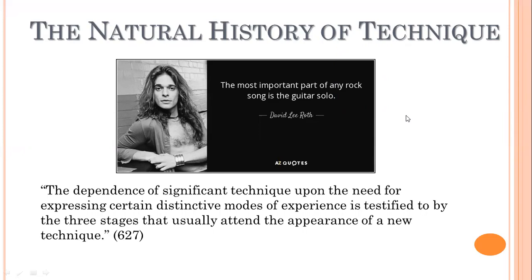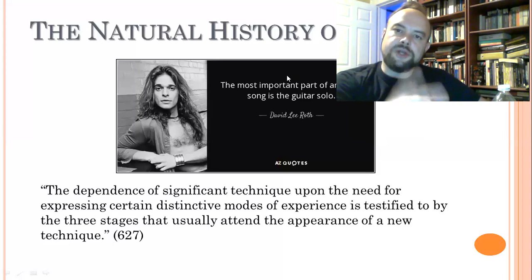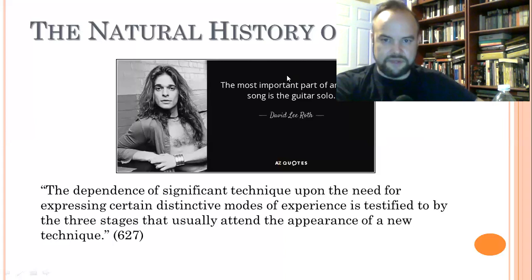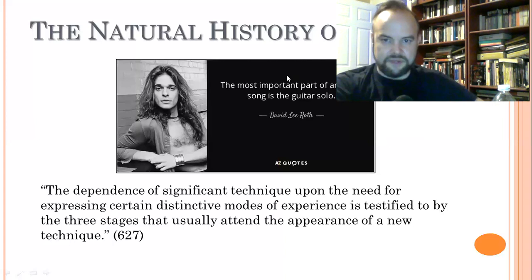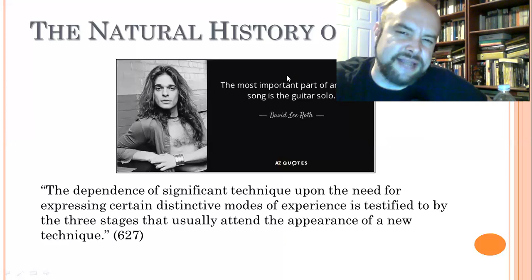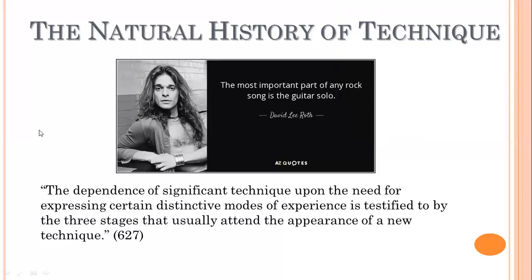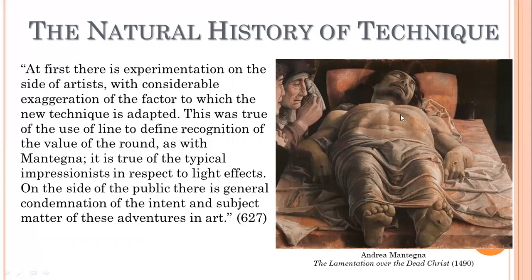Again, Dewey says technique — the dependence of significant technique upon the need for expressing certain distinctive modes of experience — is testified by the three stages that usually attend the appearance of a new technique. He thinks technique develops not just because artists can do something new, but as a response to a need to express something that can only be expressed through that new technique. He's going to give us a few examples and describe this three-stage process in which a new technique appears.